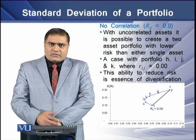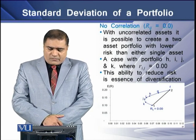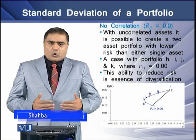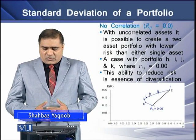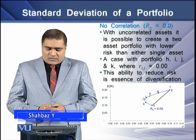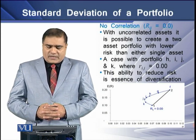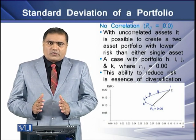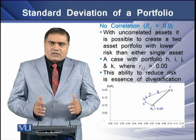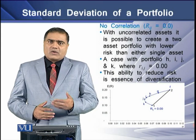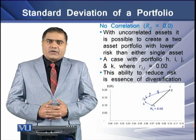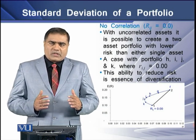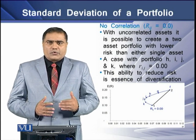Where there is no correlation between assets, it is possible to create a two-asset portfolio with lower risk than the riskiness of any individually single asset. This is the case for portfolios H, I, J, and K where the correlation equals zero. This ability to reduce the riskiness of a portfolio is termed diversification, and this is the essence of diversification. As the diagram shows, as we move to the left of the straight line, the riskiness of the portfolio keeps decreasing.